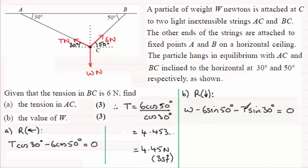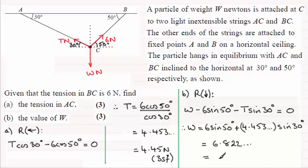All we've got to do now is we can substitute for T. Take this value here, 4.453 and so on. Rearrange it for W. And you should find then that if you rearrange it for W, W is going to equal 6 sine 50 plus T sine 30. T, remember then, is 4.453 and so on. And that's multiplied by the sine of 30 degrees. So if you work that out, you should find you get 6.822 and so on. And rounding this to three significant figures just gives us 6.82 newtons to 3sf for W. So I hope that's given you some idea then how to go about that question.